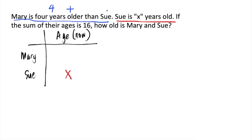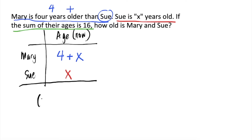Meaning, ia-add natin ang 4 sa age ni Sue. So, here we'll write 4 plus x. The sum of their ages is 16. Ibig sabihin, kapag i-add natin ang 4 plus x and x, we will get 16.